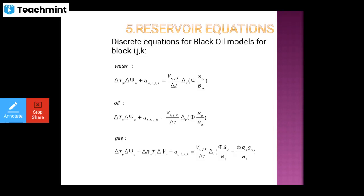So delta-T for water: then d-phi, press Q of water IJK equals, in terms of delta, the change in water saturation multiplied by the formation volume factor Bw for water. Similarly for oil, and similarly for gas. But in gas, we are adding the term phi·S_g divided by Bg, plus phi·R_s·S_o divided by B_o — so one extra term is added for gas. So these are your discrete equations for black oil models for different blocks IJK.